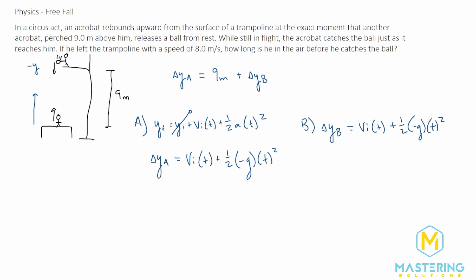In this one though, since we're dropping the ball right when this other acrobat releases the ball, it's going to be hanging in midair. So for that split second, the initial velocity is actually zero, so this can go away as well. So now we have Δy_b equals one half times negative g times t squared.